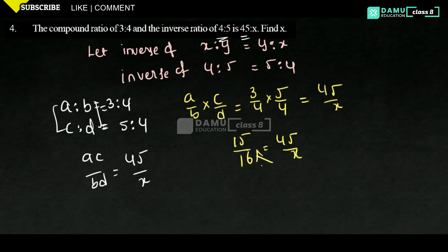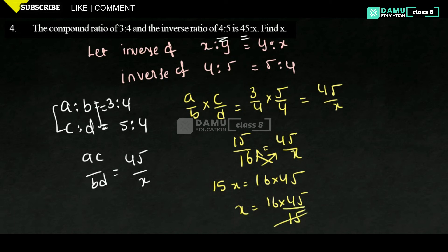Cross multiplying: 15X equals 16 into 45. Then X equals 16 into 45 by 15. Simplifying, 15 threes are 45, so we get 16 into 3, which equals 48. So X equals 48. By this method we need to solve the remaining questions.